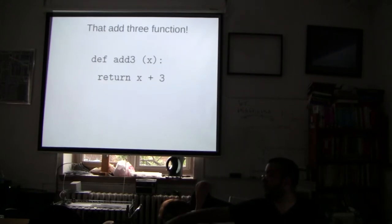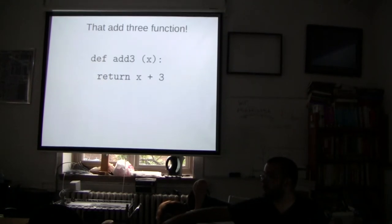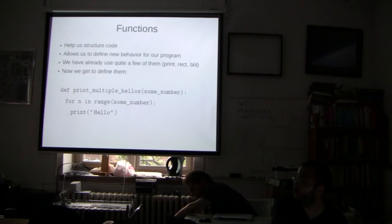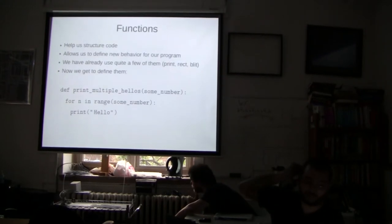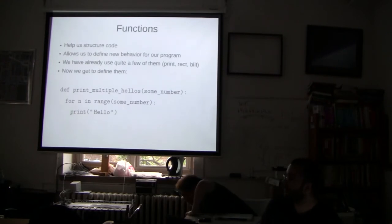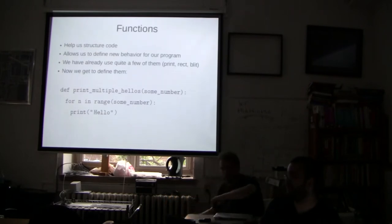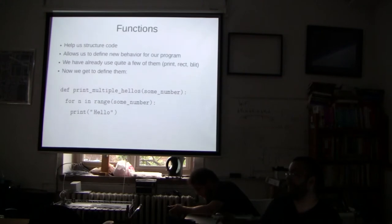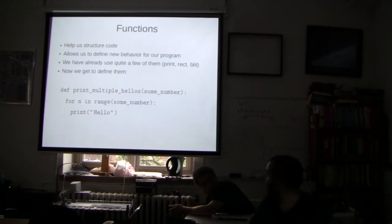Regarding the first example: the second line with the for loop — in order to print 'hello' a number of times, we require a loop. Functions can have arbitrary code in them; it doesn't matter what comes after the first definition line. It can be anything, but it cannot be nothing — Python will error if you just do `def hello():` with nothing in the body.